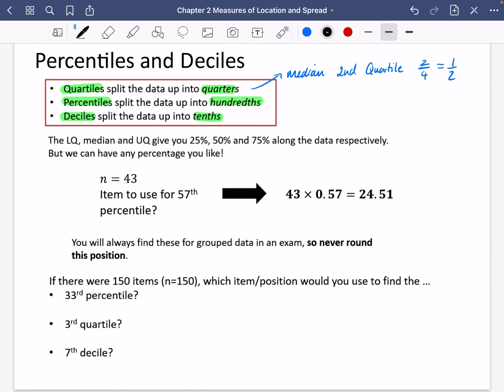That would be the 24.51 item that you would be looking for. You literally just multiply by the percentage. You find that percentage of the number of things that there are.